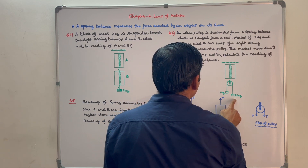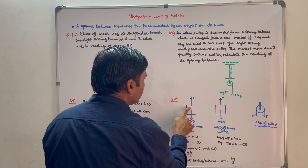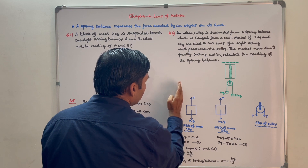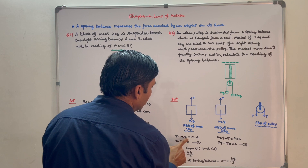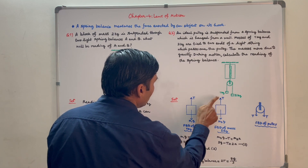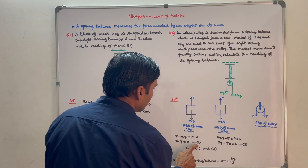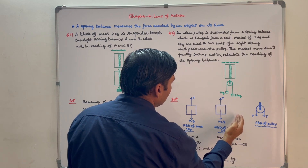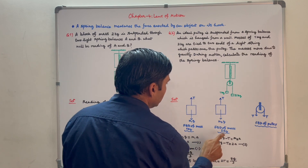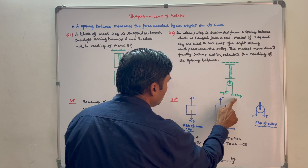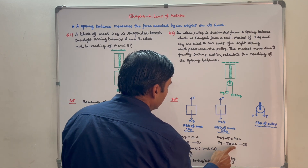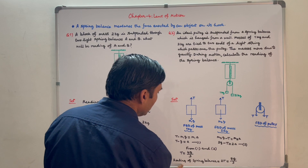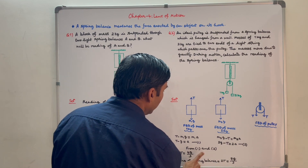Let the acceleration be A. For the FBD of the 1 kg block moving upwards: T minus m1·g equals m1·a, so T minus g equals a. This is equation 1. For the FBD of the 2 kg block moving downwards: m2·g minus T equals m2·a, so 2g minus T equals 2a. Solving these two equations for T gives T equal to 4g by 3. So the reading of the spring balance equals 2T, which is equal to 8g by 3.